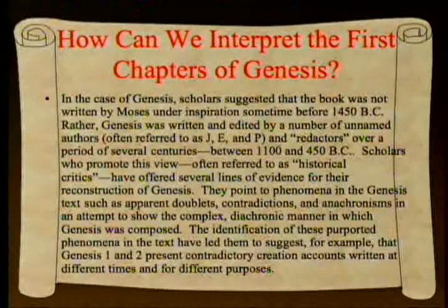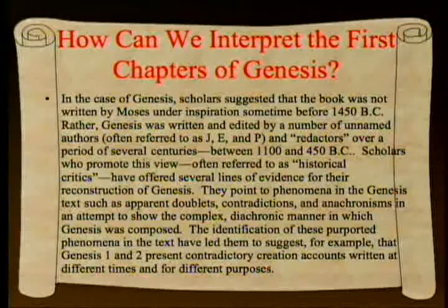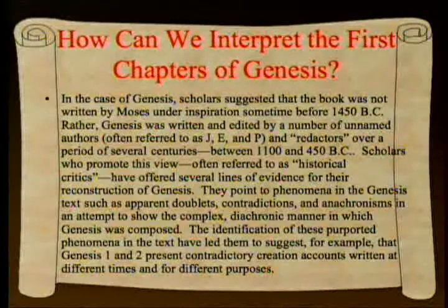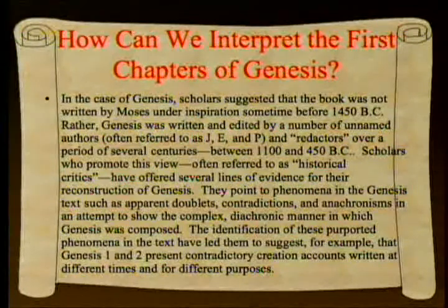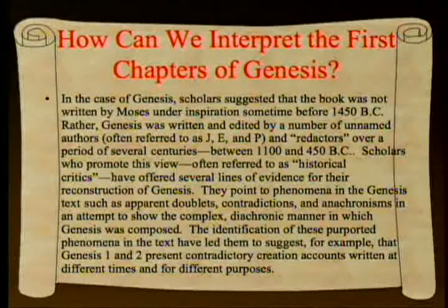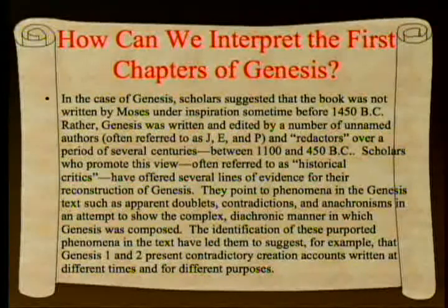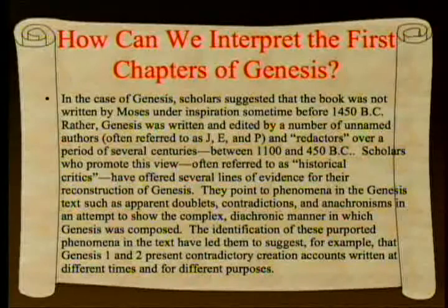In the case of Genesis, scholars suggested it was not written by Moses before 1450 B.C., but rather written and edited by a number of unnamed authors—often referred to as J, E, and P—and redactors over several centuries between 1100 and 450 B.C. These historical critics point to phenomena in the Genesis text such as apparent doublets, contradictions, and anachronisms to show the complex, diachronic manner in which Genesis was composed—suggesting, for example, that Genesis 1 and 2 present contradictory creation accounts written at different times and for different purposes.